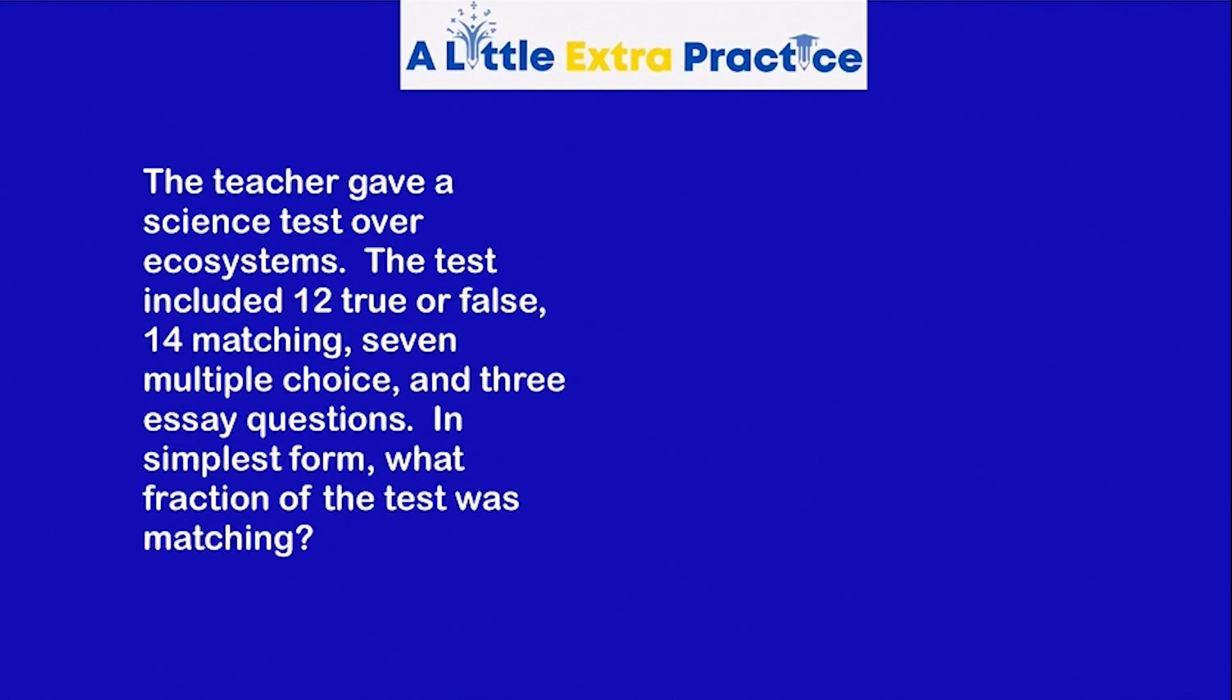The next problem, this one's a little bit more challenging. The teacher gave a science test over ecosystems. The test included 12 true or false, 14 matching, seven multiple choice, and three essay questions. In simplest form, what fraction of the test was matching? Well first, we have to figure out how many total questions there were on the test. So we have 12 true or false, 14 matching, seven multiple choice, and three essay questions. I'm going to combine those two. So our total number of questions is 36.